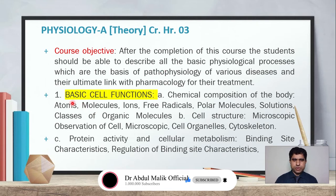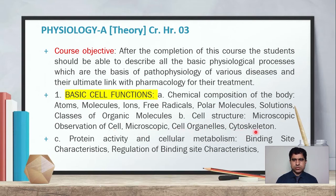The first chapter will be basic cell functions. Subheading A will be chemical composition of the body, in which atoms, molecules, ions, free radicals, polar molecules, solutions, and classes of organic molecules will be covered. Subheading B will be cell structure, including microscopic observation of the cell, microscopic cell organelles, and cytoskeletal. Subheading C will be protein activity and cellular metabolism, including binding site characteristics.